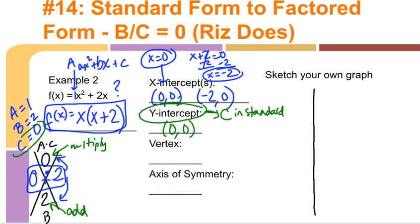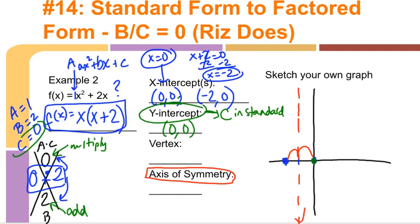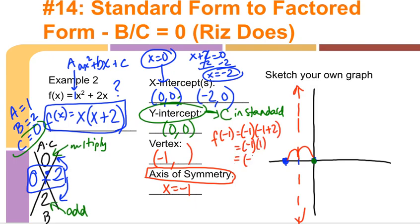Sketching Example 2: one x-intercept is at (0, 0) and another at (-2, 0). The y-intercept is also (0, 0). To find the vertex, find the axis of symmetry — the halfway point between -2 and 0 is -1, so x = -1 is the axis of symmetry. Substituting: f(-1) = (-1)(-1 + 2) = (-1)(1) = -1. So the vertex is (-1, -1). Plot these points and draw the parabola.